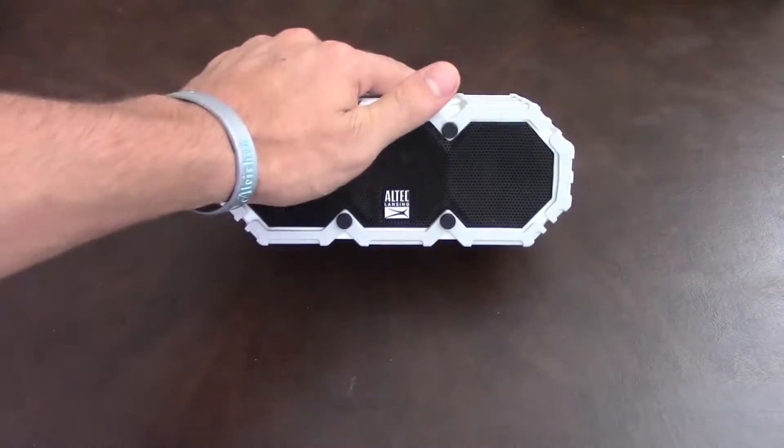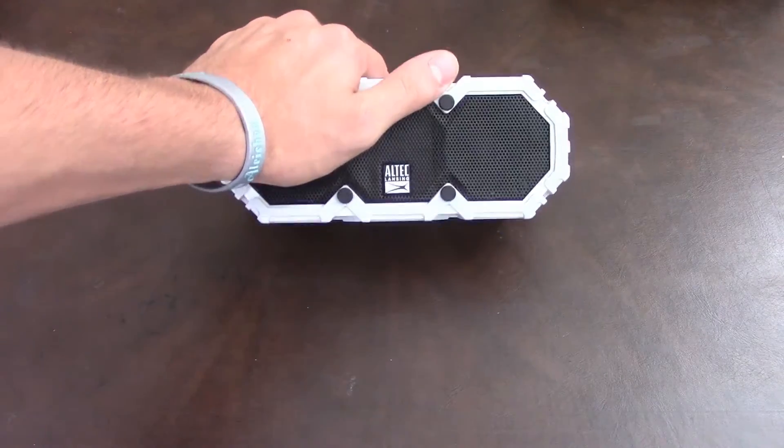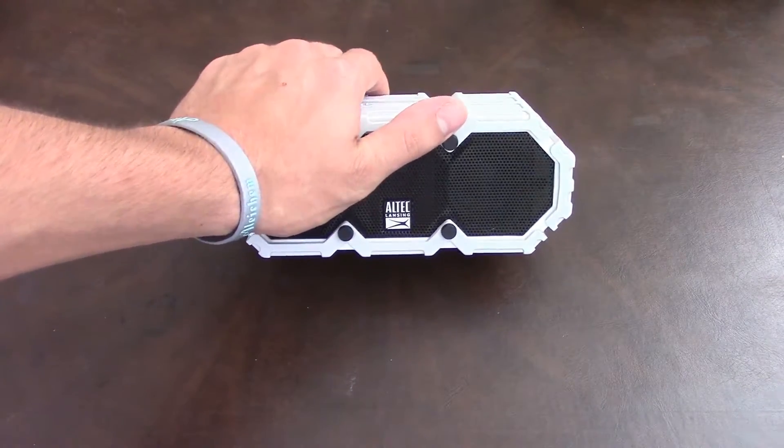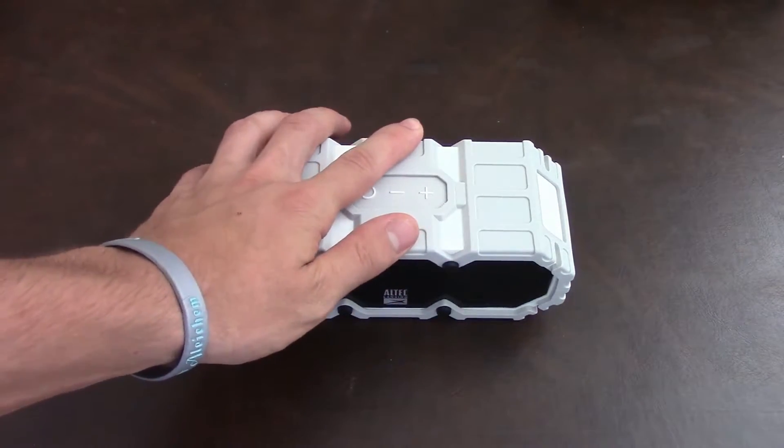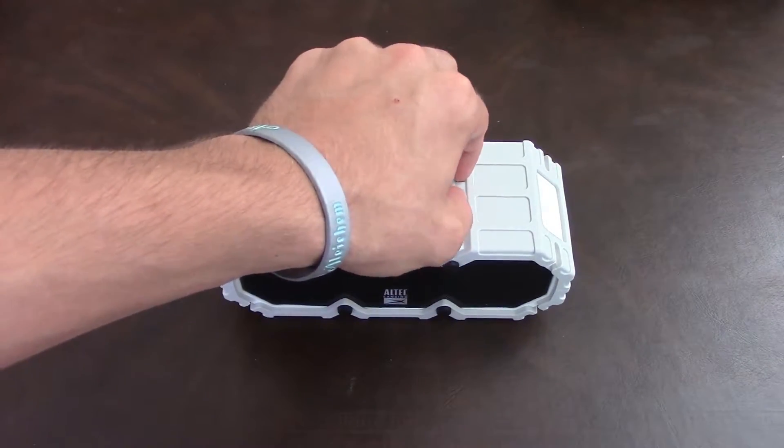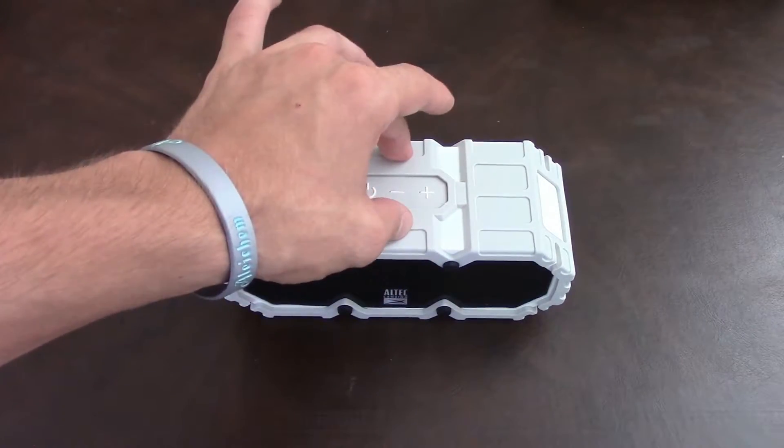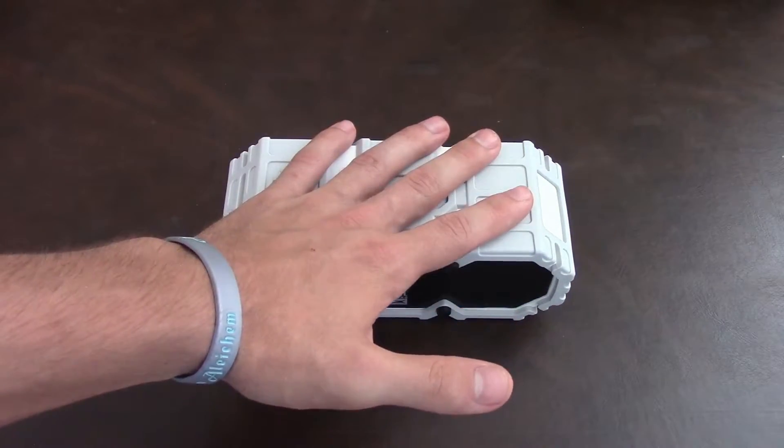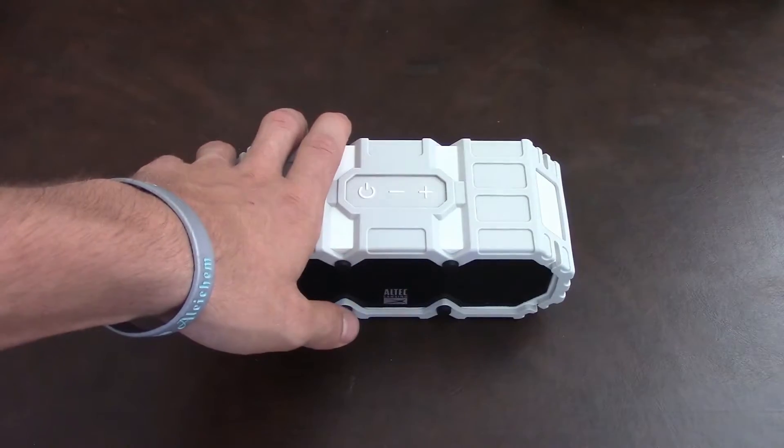So this is the Altec Lansing Lifejacket II portable Bluetooth speaker, weighs two pounds, and after a month of what I've done to it, it holds up exceptionally well, still works. There's no problems with it whatsoever.